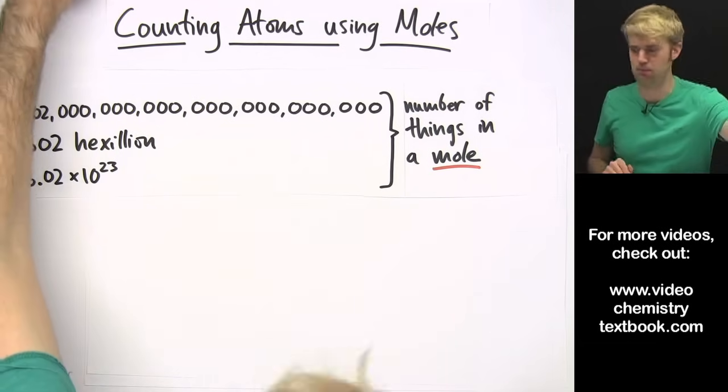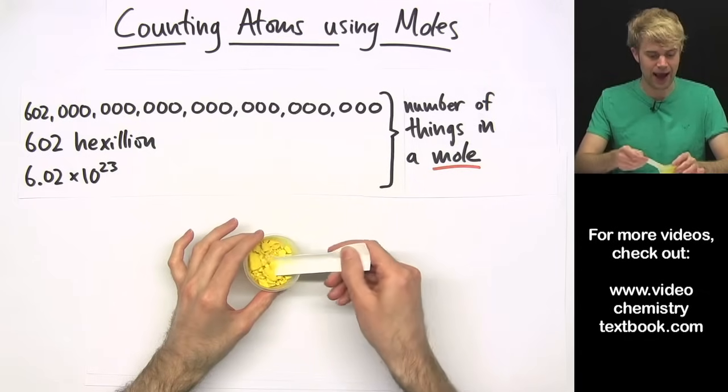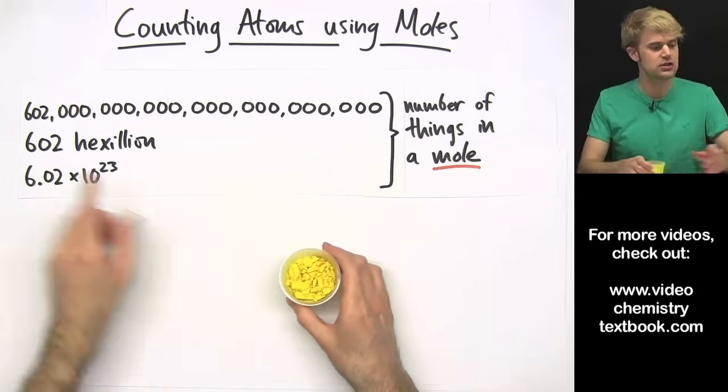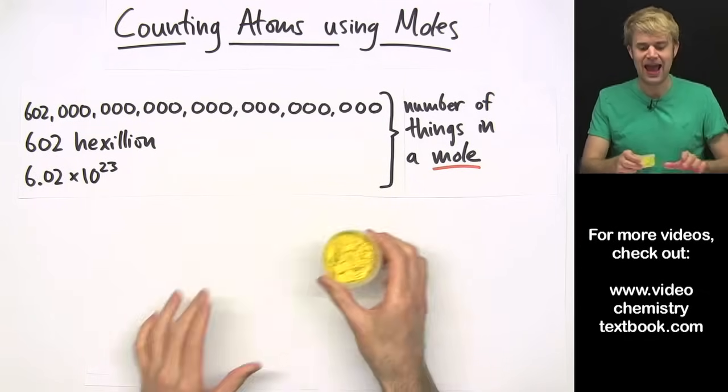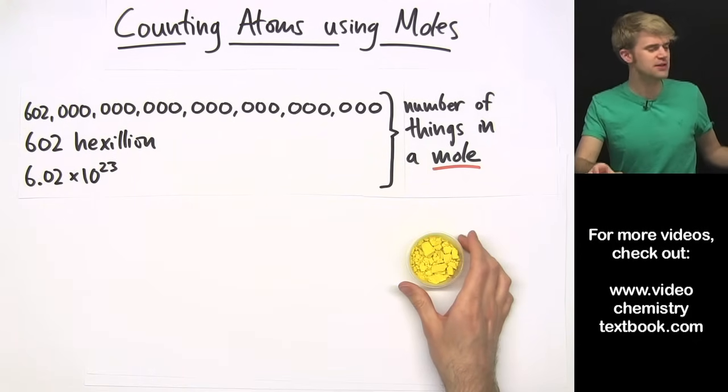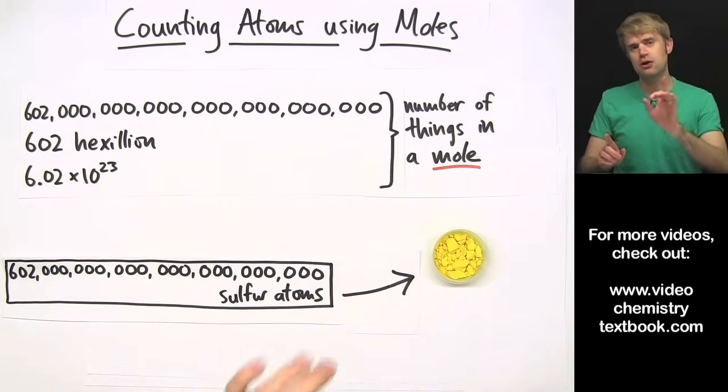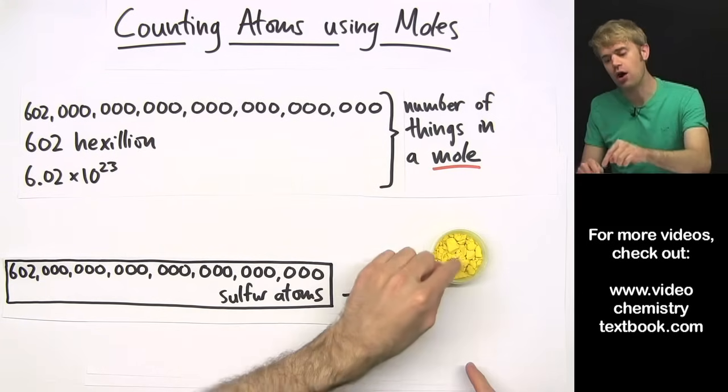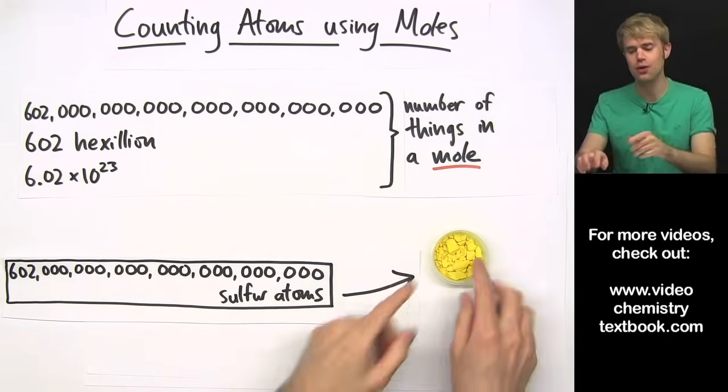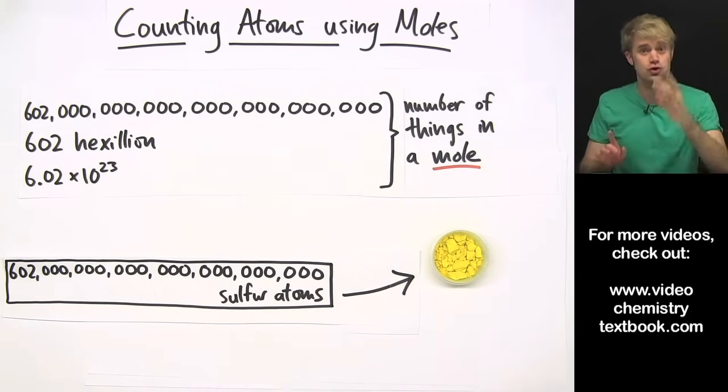Now let's take a look at a mole. Right here, I have a mole of sulfur atoms which is just about 602 hexillion sulfur atoms. Now this is pretty crazy because it's such a giant number of sulfur atoms. Here's my question: How do I know that there are 602 hexillion sulfur atoms here? I couldn't count them out for two reasons.